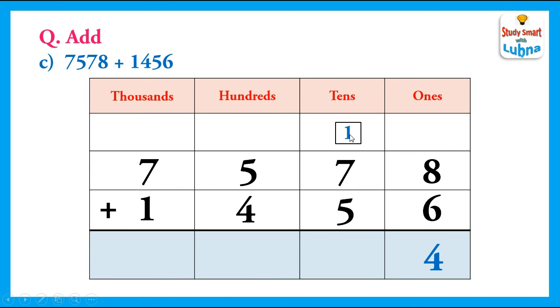After this we will add the tens. In the tens column we have 1, 7 and 5. We will add them: 1 plus 7 is 8, and 8 plus 5 is 13. So we will regroup the tens. We will write 3 in the tens column and carry 1 to the hundreds column.